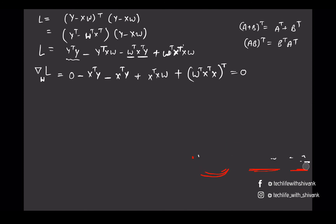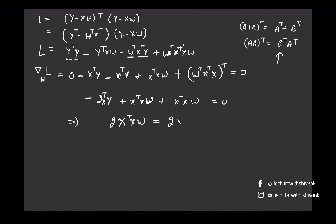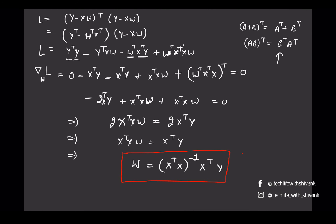Setting the full gradient equal to zero gives: -2·XᵀY + XᵀXW + XᵀXW = 0, which simplifies to -2·XᵀXW = -2·XᵀY using the identity (AB)ᵀ = BᵀAᵀ. This implies XᵀXW = XᵀY, and multiplying both sides by (XᵀX)⁻¹ gives W = (XᵀX)⁻¹XᵀY. Hence we have derived the normal equation for linear regression.